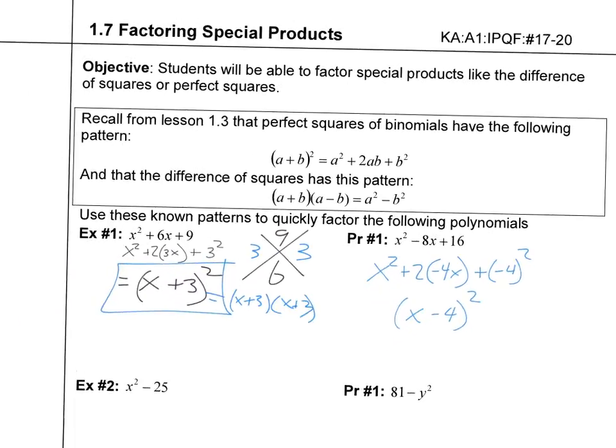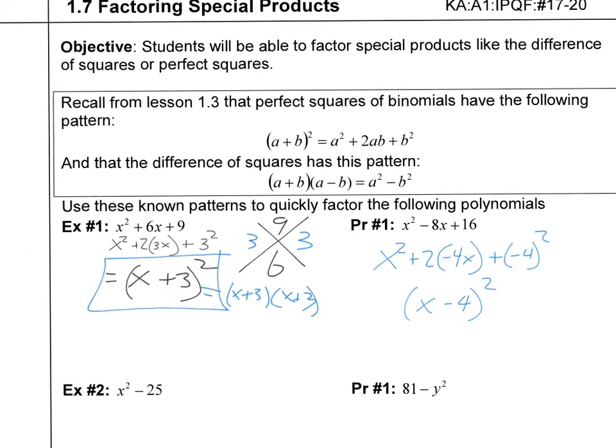Now let's take a look at what I did on both of these. I looked at the middle term and just said, if I divide that middle number by 2, so 6 divided by 2, I get 3. And if I square that number, do I get 9? Yes, I do. So this must be a perfect square of (x+3)². How about this one? The middle number is negative 8. If I divide that by 2, I get negative 4. Is negative 4 squared 16? Yes, it is. So this must be this pattern, so it must be (x-4)².